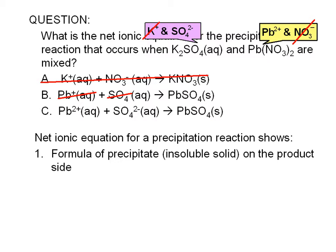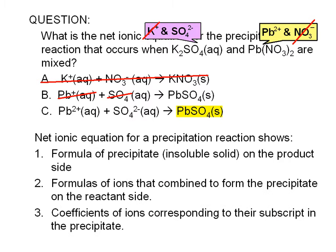The net ionic equation for a precipitation reaction simply shows the formula of the precipitate on the product side. In this case, PbSO4, the formulas of the ions that combine to form the precipitate on the reactant side and to balance the equation.